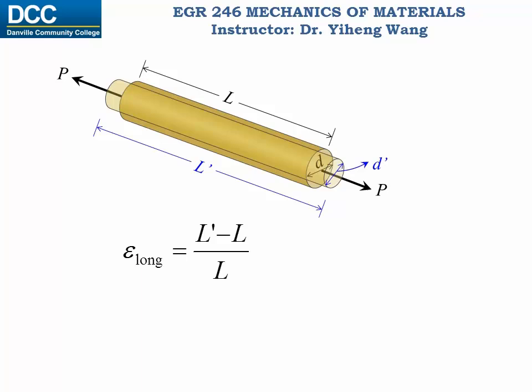The normal strain epsilon along the axial or longitudinal direction is defined as the new length L prime minus the original length L, divided by the original length. And the normal strain epsilon along the radial or lateral direction is defined as the new diameter D prime minus the original diameter D, divided by the original diameter.